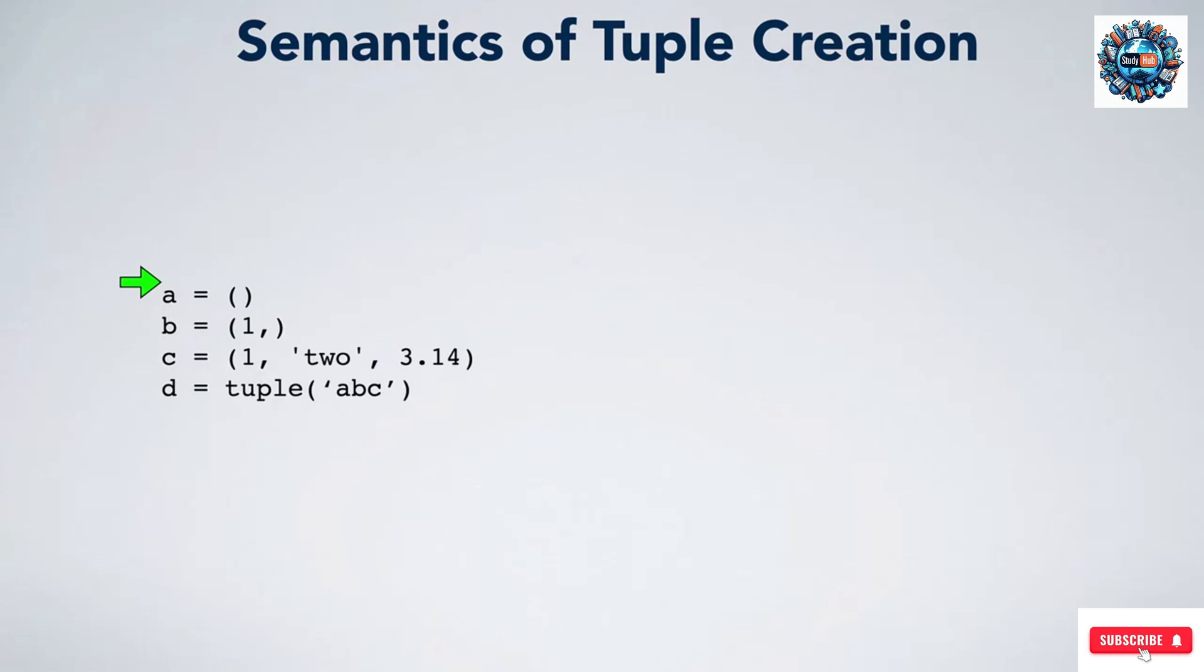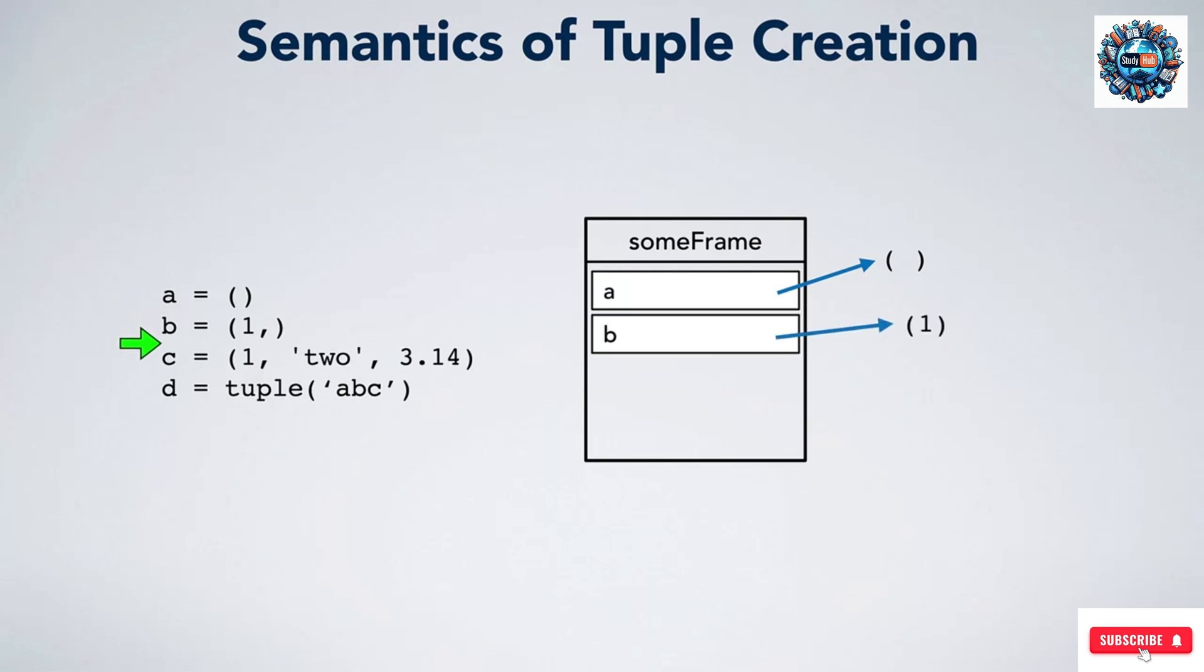Now let us look at the semantics of tuple creation. We start with an empty frame for whatever function we are in, and do an A equals an empty tuple. We'll draw that tuple outside of the frame. It is in an area called the heap, and the value inside A's box is an arrow pointing at that tuple. Next we do B equals the one element tuple with the number 1. We draw that in the heap and point an arrow at it too.